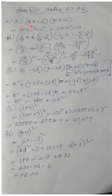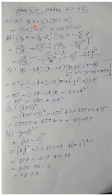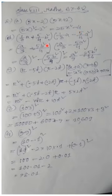Here, a is 5x and b is 2. So it becomes (5x)² minus 2². (5x)² equals 25x², and 2² equals 4. So the answer is 25x² minus 4.